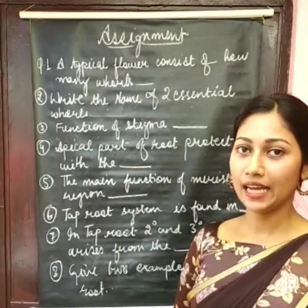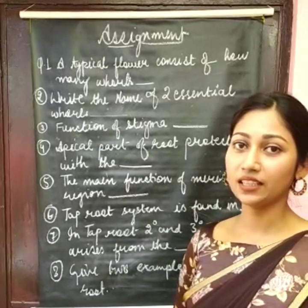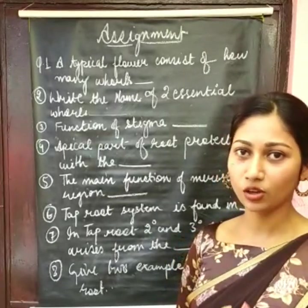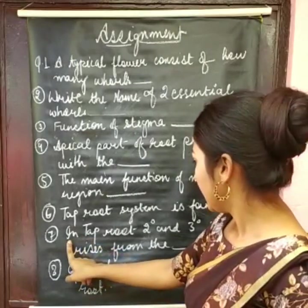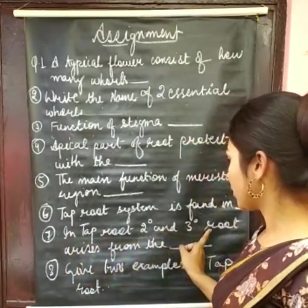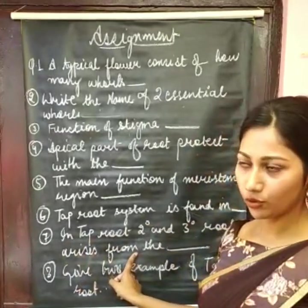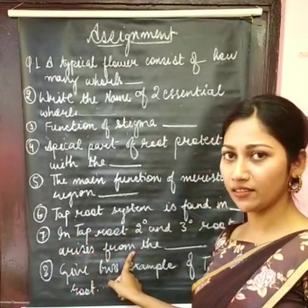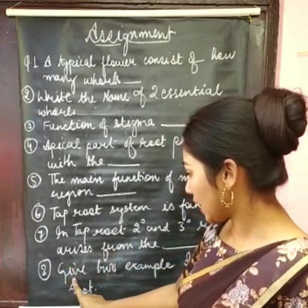You have to know that carrot and turnip are examples of which type — monocots or dicots. Secondly, in tap root, do secondary and tertiary roots arise from the main root system or the secondary system?